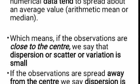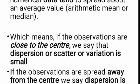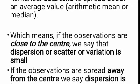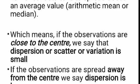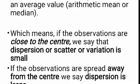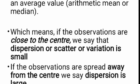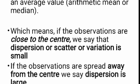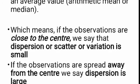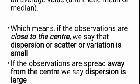If the observations are spread away from the center values, then such variations are large variations. So we can conclude that if the values tend to the center of the distribution, each and every value tends to the center of the distribution, we can call it variation is small. If the observations are away from the center, we can call it dispersion is large.